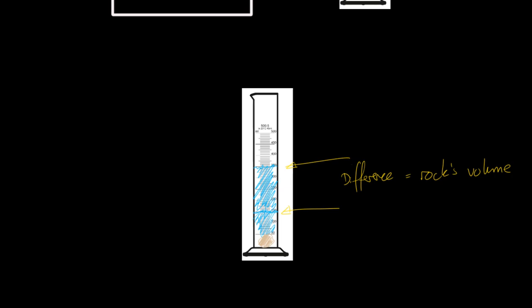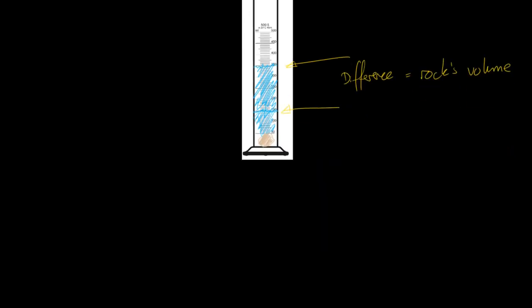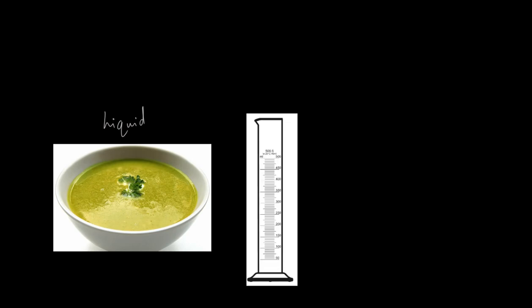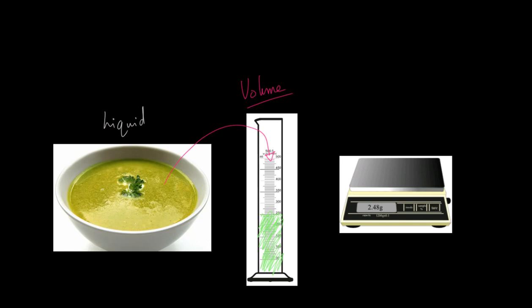Finally, what about working out the density of a liquid? Thankfully this one is relatively straightforward. You get yourself a measuring cylinder, pour your liquid in, and read the volume right off the cylinder — that's how you get your volume, no great problem. But how do you get the mass of a liquid? You can't just pour it onto a balance. What you do is place your measuring cylinder onto the balance and get a mass reading.